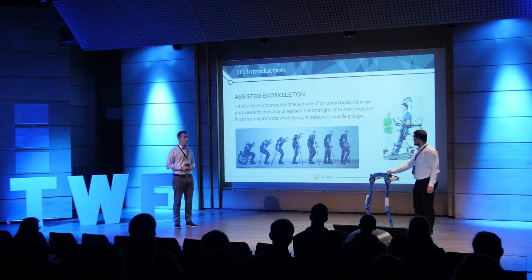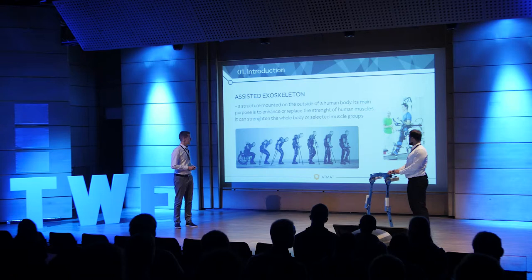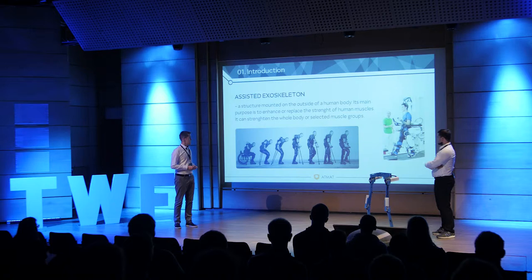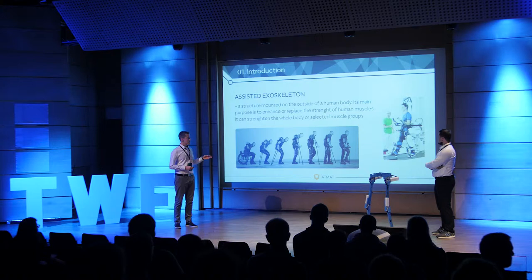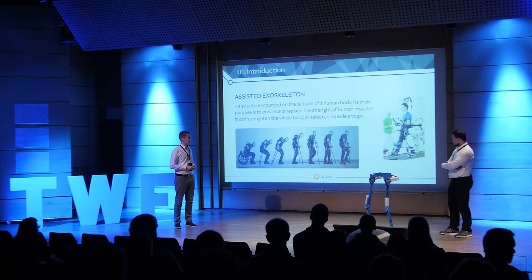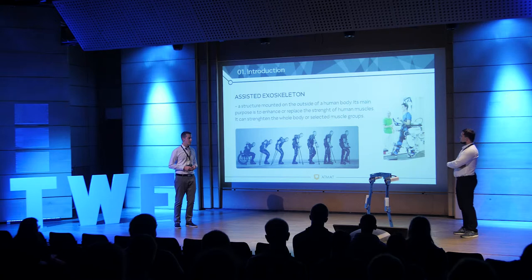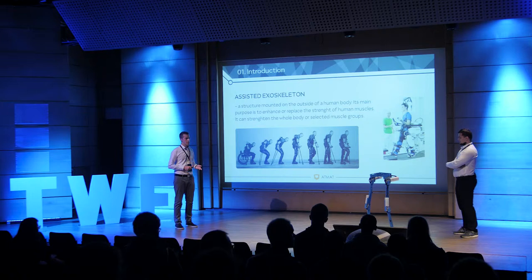At the beginning — what actually is the exoskeleton? It is a mobile structure mounted on the human body, like you can see in the picture on the left. You can get up and go with this exoskeleton. This is similar to the stationary version on the right, but the stationary version can only re-educate patterns of movement, whereas the exoskeleton can also transport the patient inside or outside buildings.